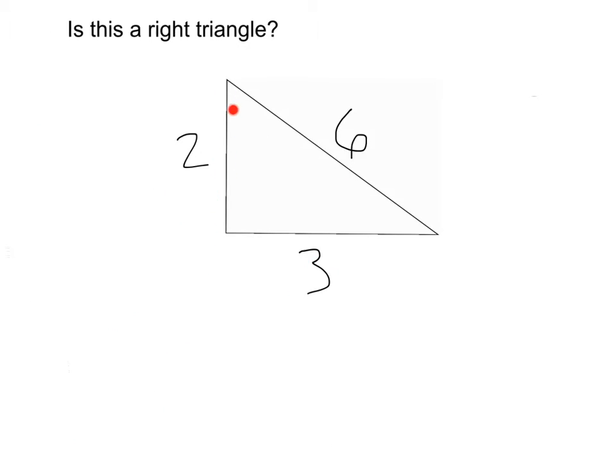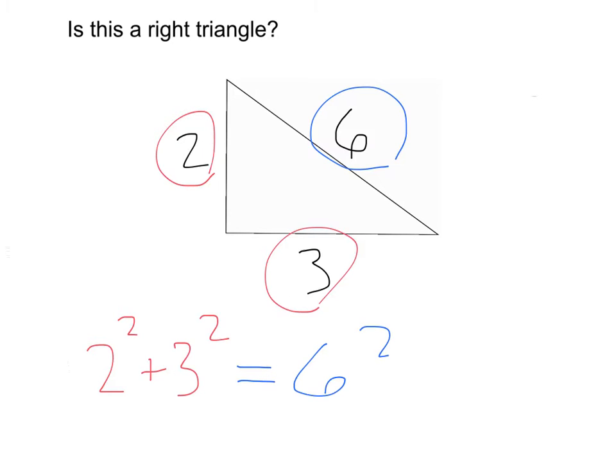Here we've got another triangle with legs 2 and 3 and a hypotenuse of 6. Is this a right triangle? Well, to find out if it's a right triangle, let's try using the Pythagorean theorem. We have our A and our B. That's going to be 2 squared plus 3 squared. Let's see. Does that equal our hypotenuse squared, 6 squared?